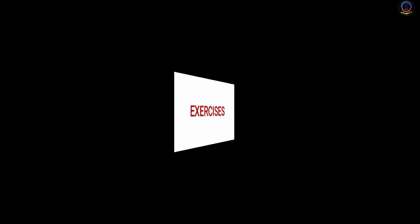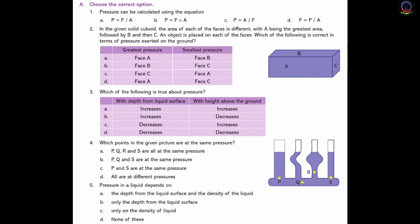Exercises, Question A: Choose the correct option. Number 1: Pressure can be calculated using the equation. Option A: P = F/A. Option B: P = F×A. Option C: P = A/F. Option D: F = P/A. The right answer is A — P = F/A, that is, pressure equals force upon area.